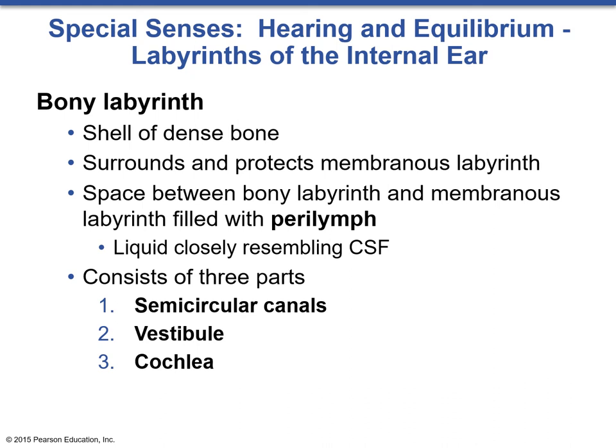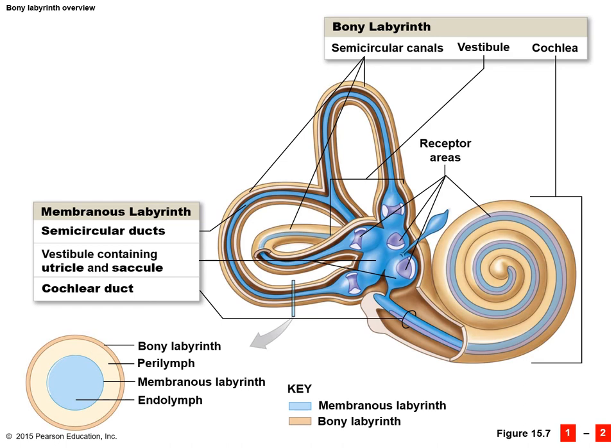You can imagine the bony labyrinth like an egg. If you crack the egg, inside there's egg white with a yolk in the center. The outer shell — the bone — houses the egg white, or perilymph. The yolk represents the membranous labyrinth, and inside it is another substance called endolymph. A diagram shows this layering: the bony labyrinth is the shell, perilymph is the egg white, the membranous labyrinth is the yolk, and endolymph is the fluid inside.